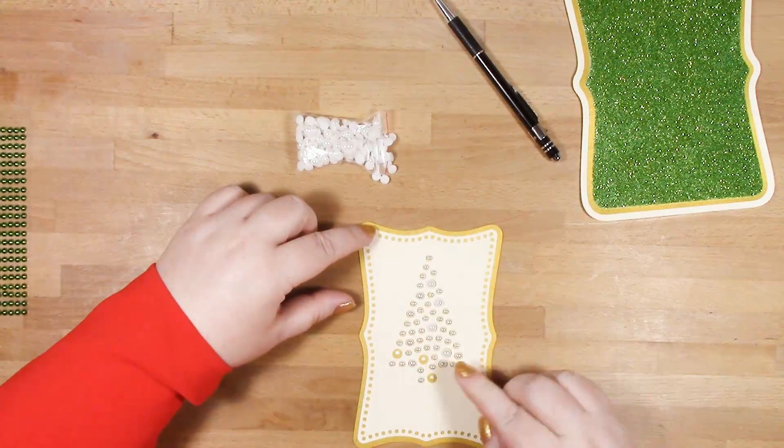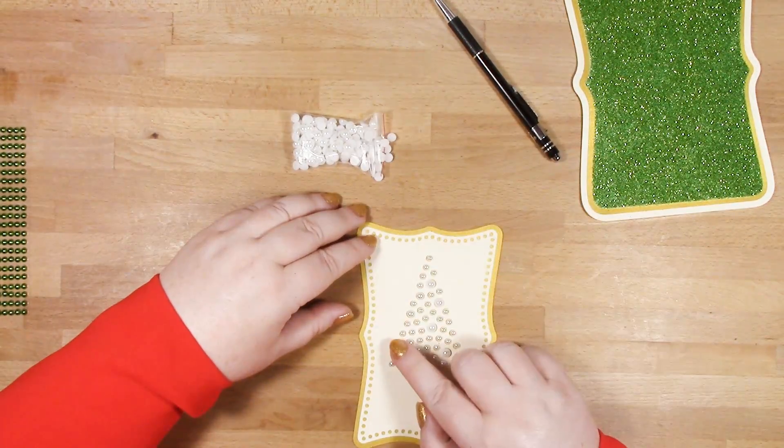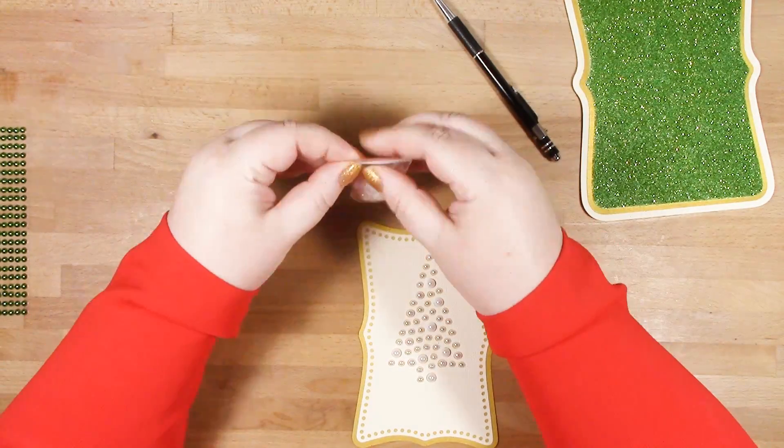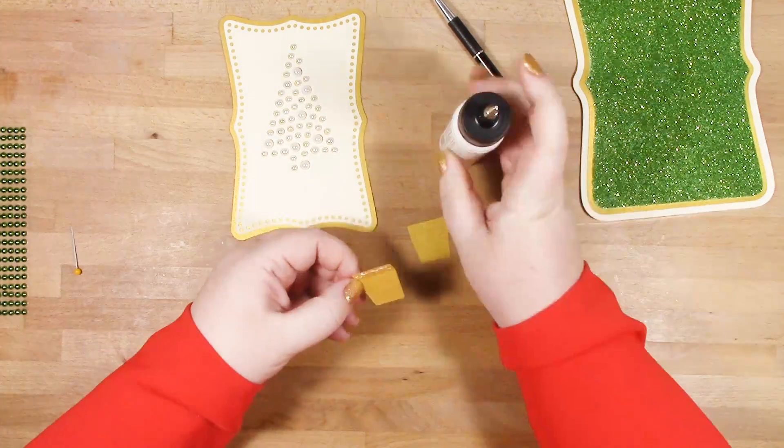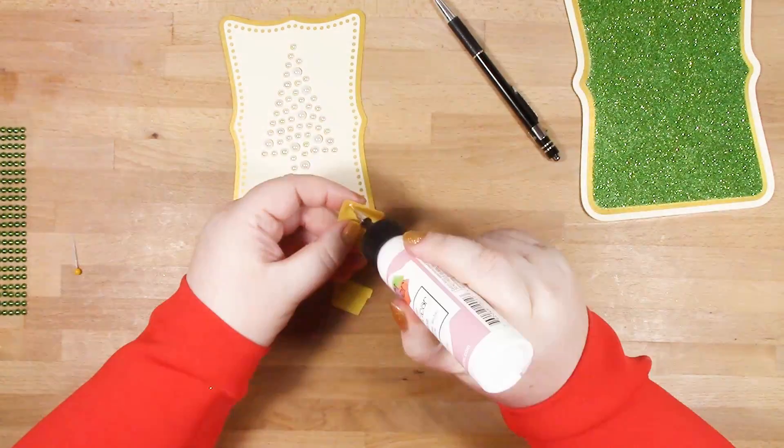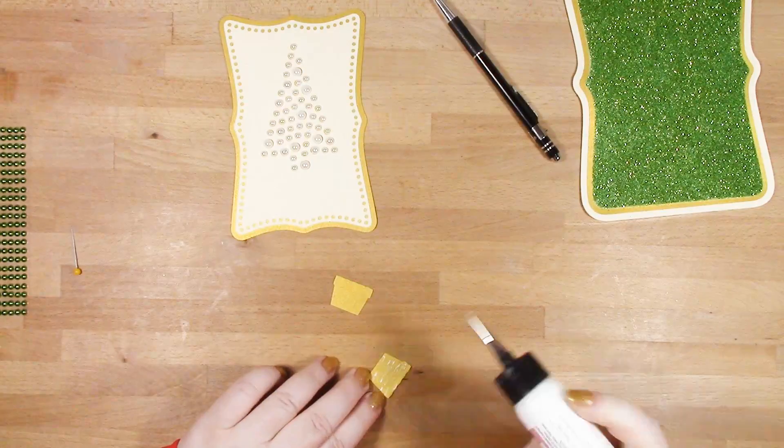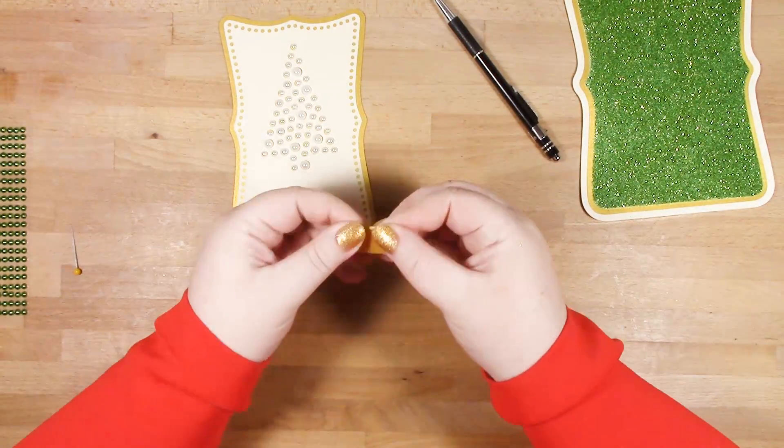I didn't have any self-adhesive 6mm pearls, so I'm just using some loose ones. And as I didn't add any double-sided adhesive on the back of my tree design, I just popped a little bit of glue in each of the little holes and just put my pearls in on top.